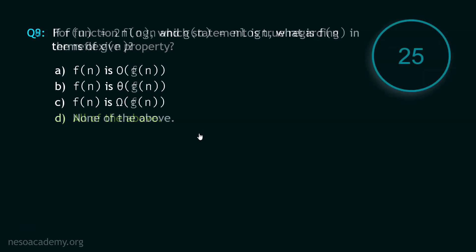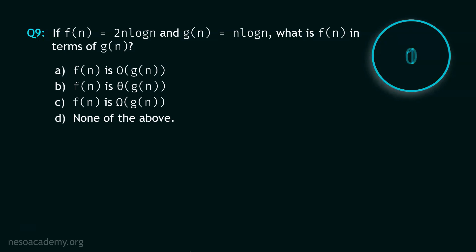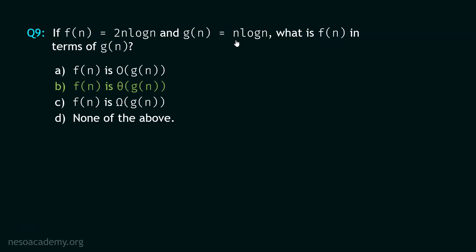Now let's move to question number 9. Your time starts now. Stop. The correct option is option B — f(n) is Θ(g(n)) — because these two functions are asymptotically equal, as can be observed.